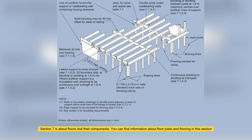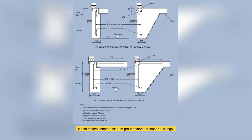Section 7 is about floors and their components. You can find information about floor joists and flooring in this section. It also covers concrete slab on ground floors for timber buildings.